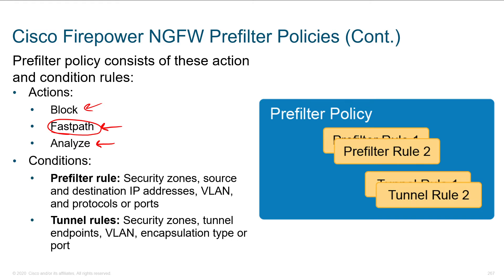Some of the conditions we consider are security zones, source and destination IP, VLAN, protocol, and port numbers. For tunnel rules, we can also leverage security zones, tunnel endpoints — referring to which office you're connected to, such as Phoenix or Atlanta — VLAN information, encapsulation types, and port numbers.